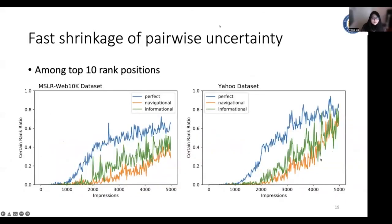To further verify the effectiveness of our exploration strategy, we reported the ratio of certain rank orders among all possible document pairs at the top 10 positions in our model. We can clearly observe that the certain rank orders quickly reach a promising level. And this confirms our theoretical analysis of the convergence of the model.